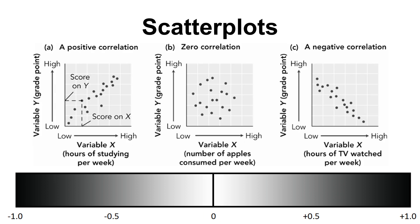Here are some visual examples using scatter plots. A positive correlation: drawing a line of best fit, a lower score on X is also a low score on Y, and a high score on X is also a high score on Y. For example: hours of studying versus grades — the more you study, the better grades you have. Or it could be that students who have high grades are more motivated to study. Directionality is not guaranteed.